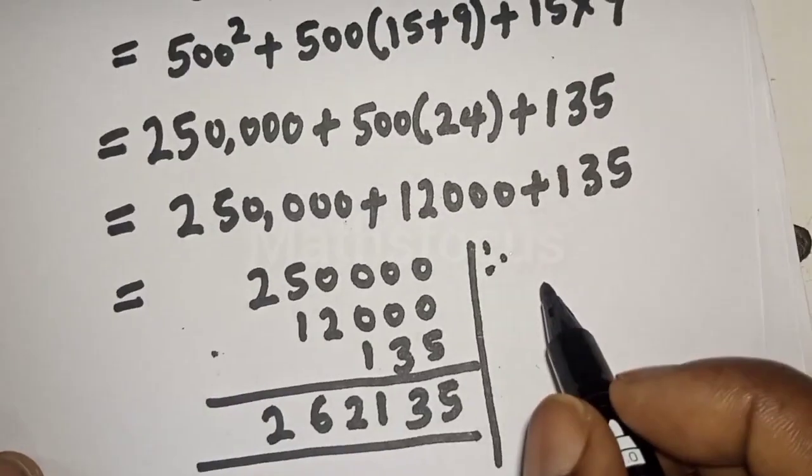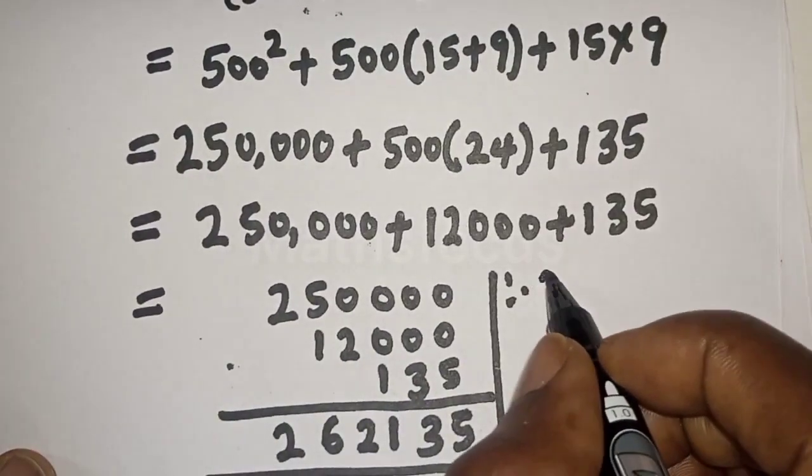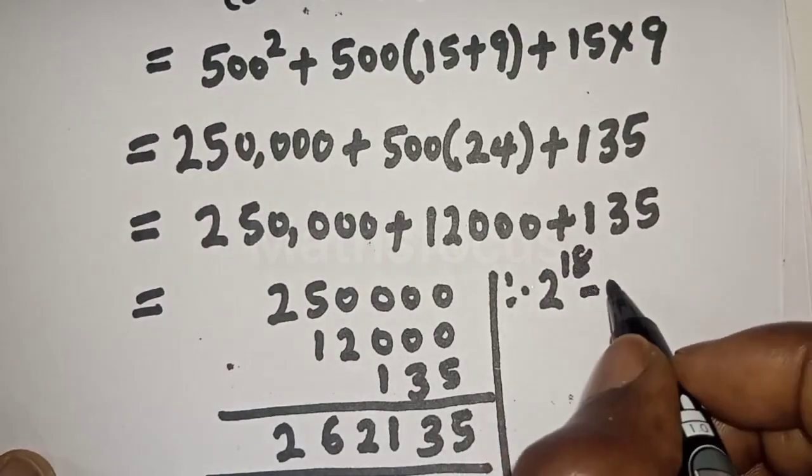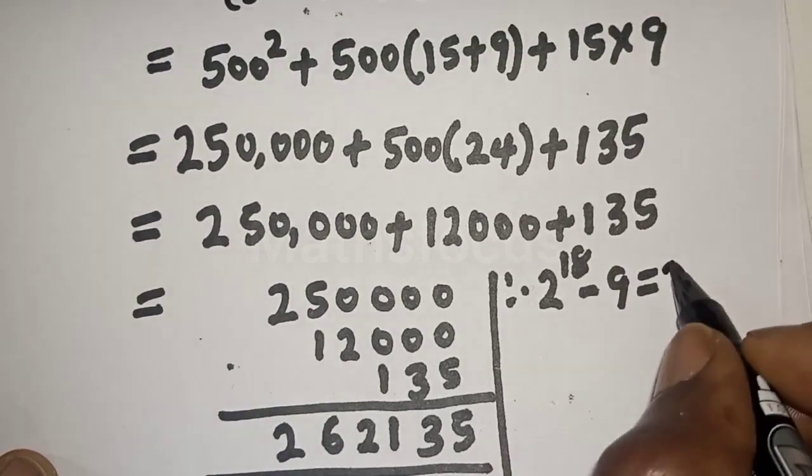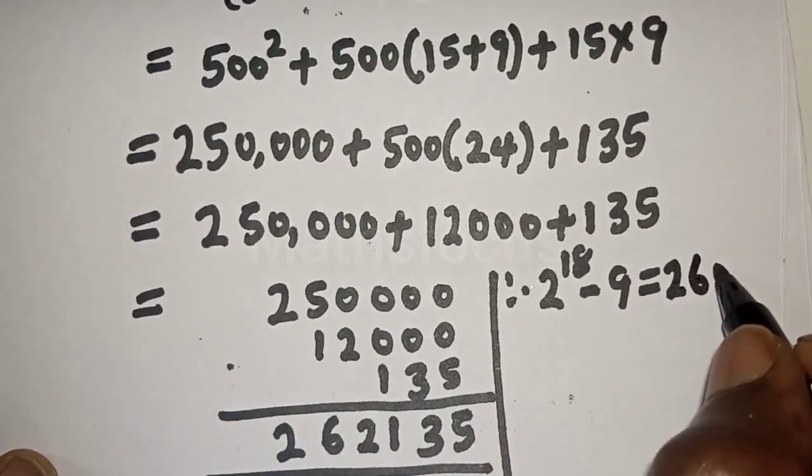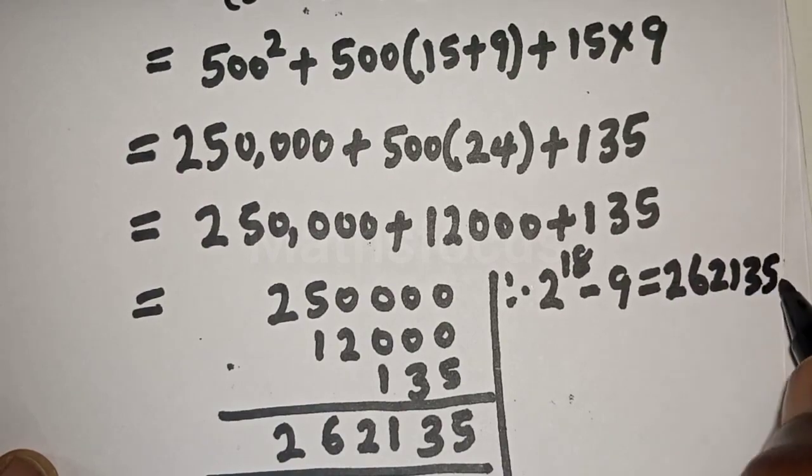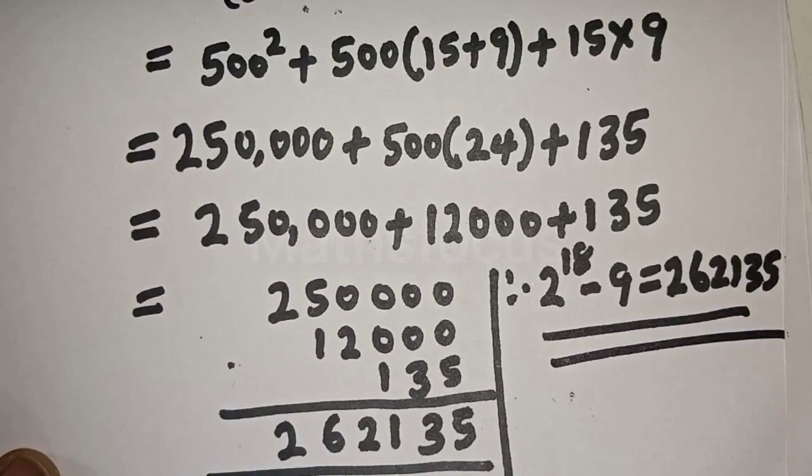Therefore, 2 raised to power 18 minus 9 is equal to 262,135. And this is the final answer.